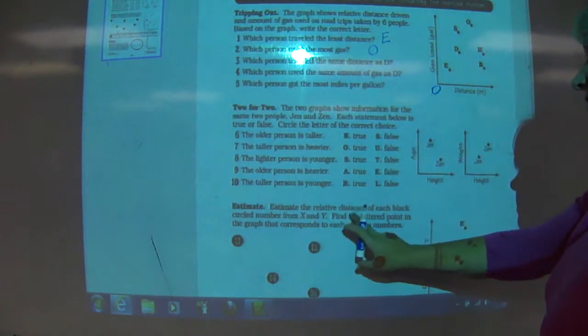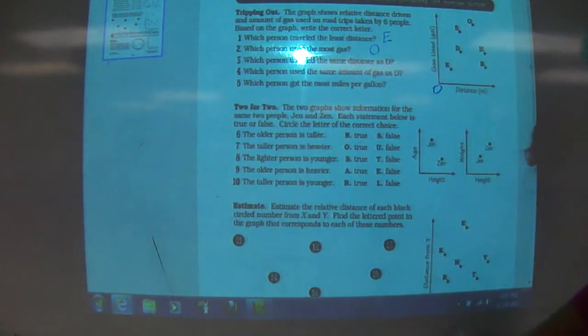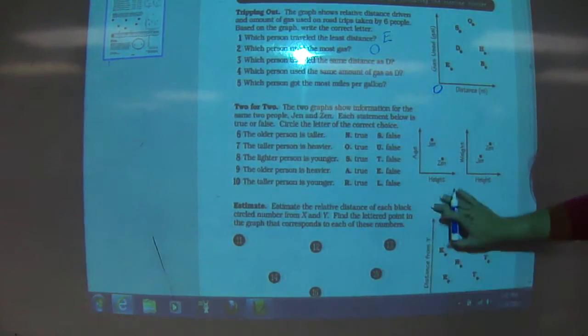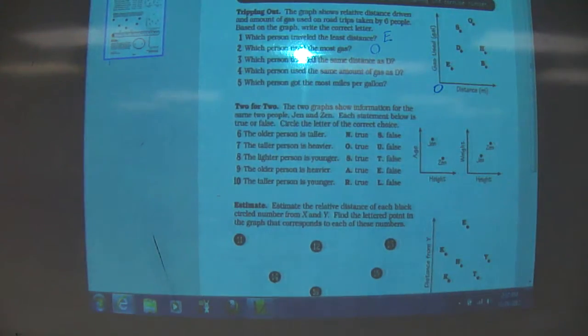Here, estimate the relative distance from each black circled number from X to Y. X and Y is down here, and you're going to have to - this is the distance from Y and this is the distance from X. So you're going to have to make estimates to make it work.